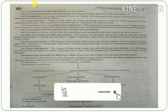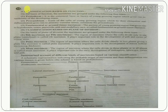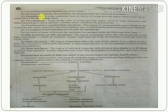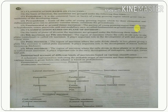Pro-cambium is the area of young growing cells which by their elongation and differentiation give rise to primary vascular tissue. The third type is fundamental or ground tissue meristem. The portion of the young growing area that gives rise to hypodermis, cortex, pericycle, pith, and medullary rays is known as ground tissue meristem or fundamental meristem.